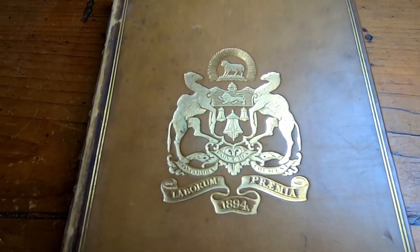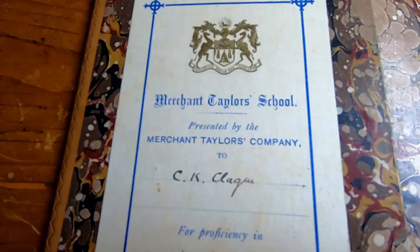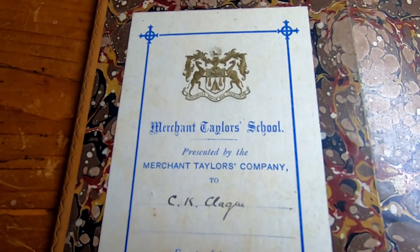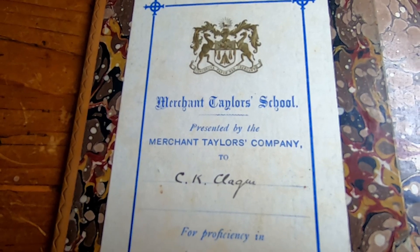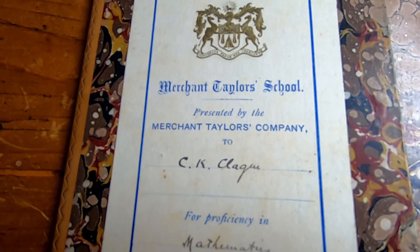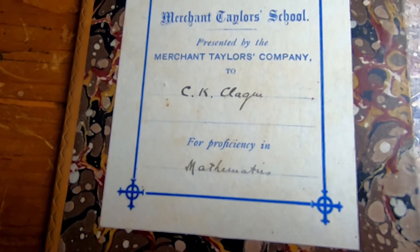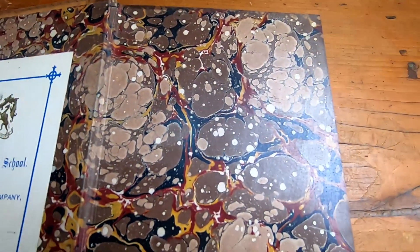Let's take a look inside this book. So this is the inside cover. It says Merchant Taylor School, presented by the Merchant Taylor School company for proficiency in mathematics. I mean, look at these colors.